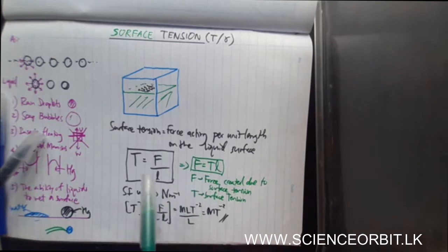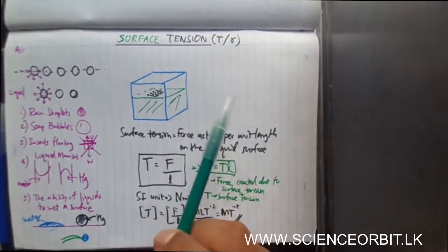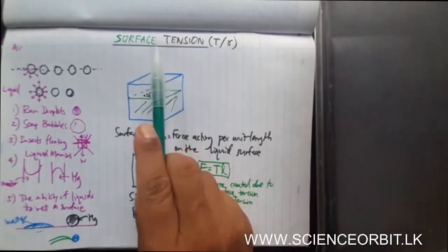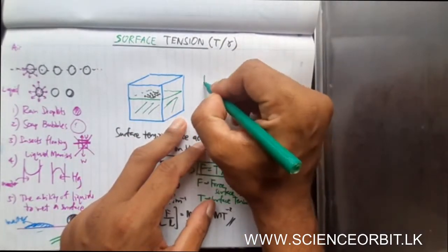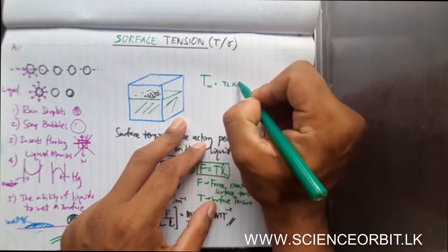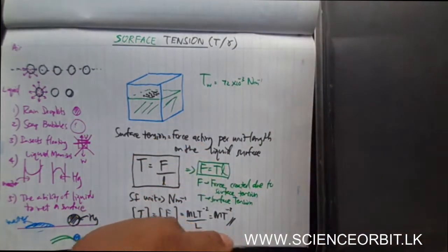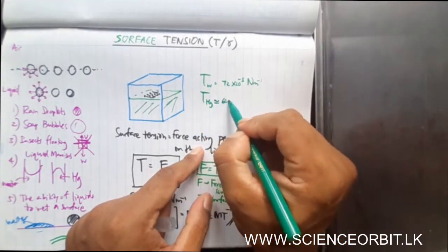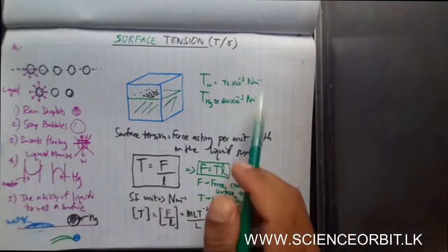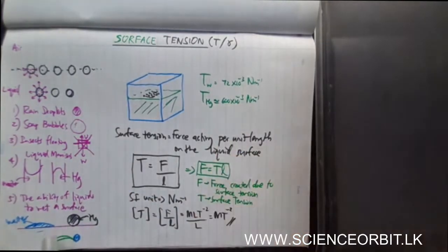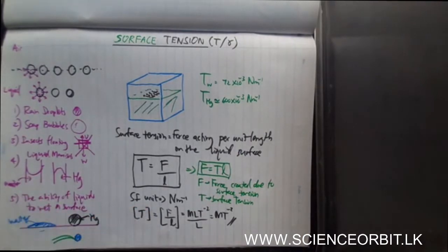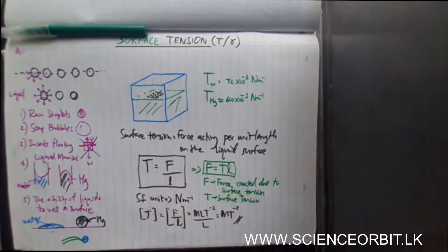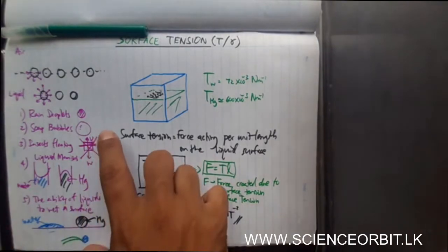Just like viscosity, surface tension is a property which depends on the nature of the liquid. For water, the surface tension is roughly 72 × 10⁻³ N/m, and for mercury it is around 600 × 10⁻³ N/m — both at 25°C. You can see the surface tension of mercury is much higher compared to that of water. That is why we see differences in the meniscus shapes: the concave meniscus of water and the convex meniscus of mercury.